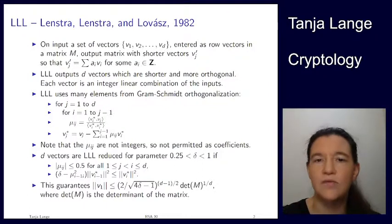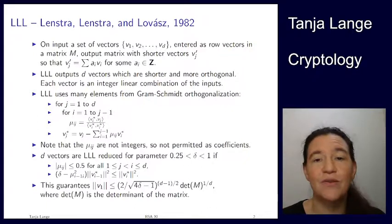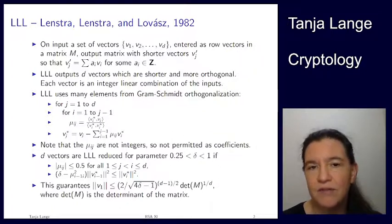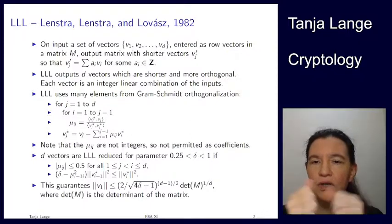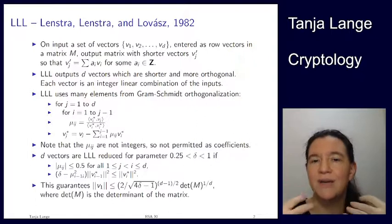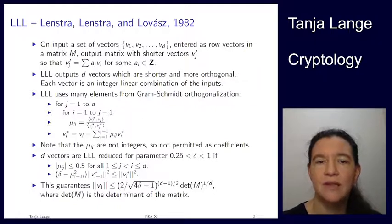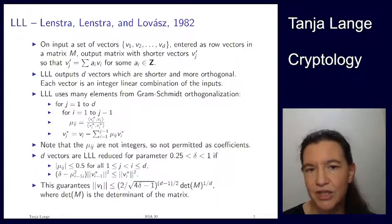The outputs of LLL are again d vectors, each typically shorter than the input vectors. If you feed it something already short, like the identity matrix, it outputs the identity. But on random inputs, the outputs are shorter and more orthogonal to one another — pairwise dot products are closer to zero, meaning the angle between those vectors is small.